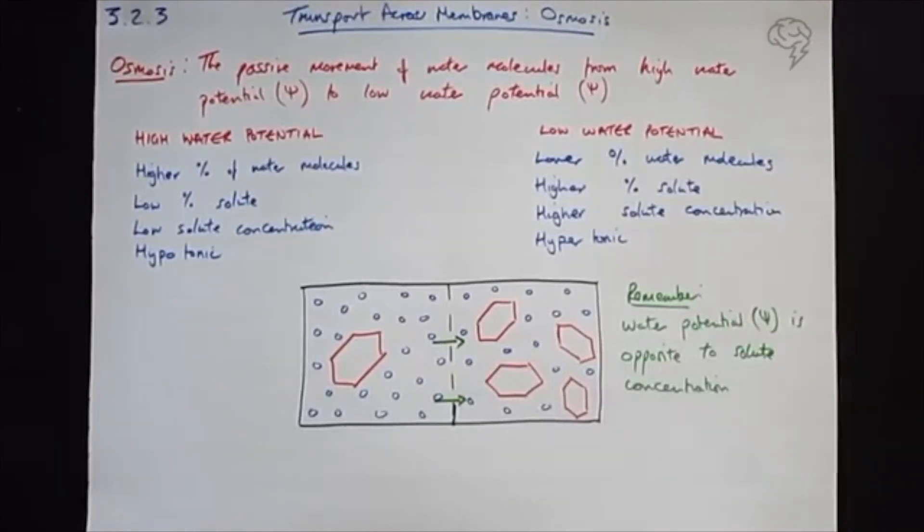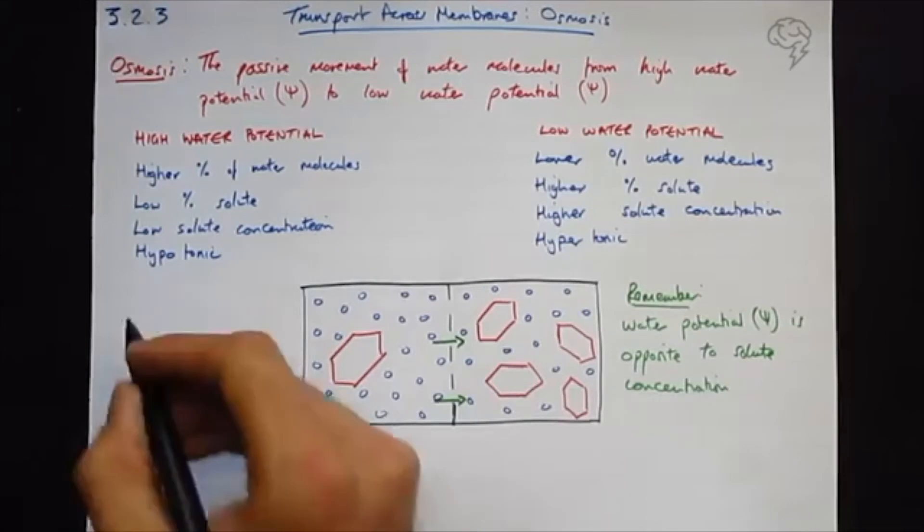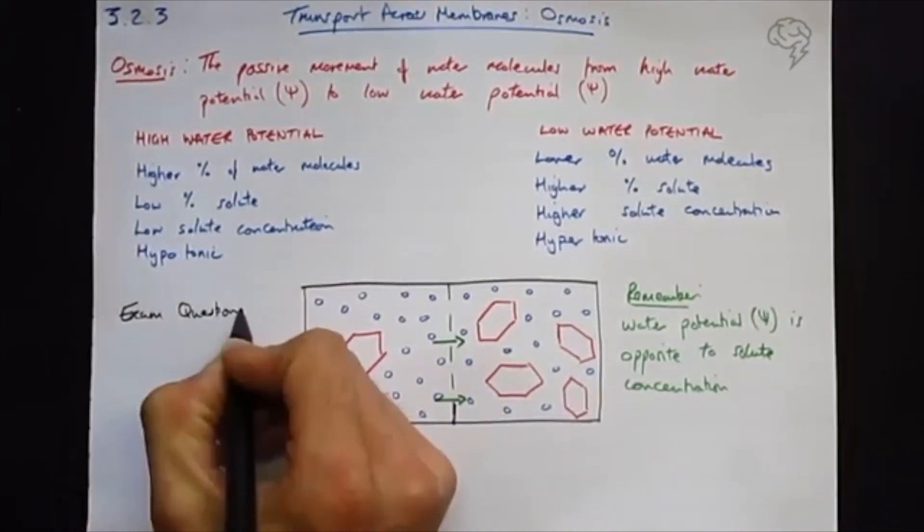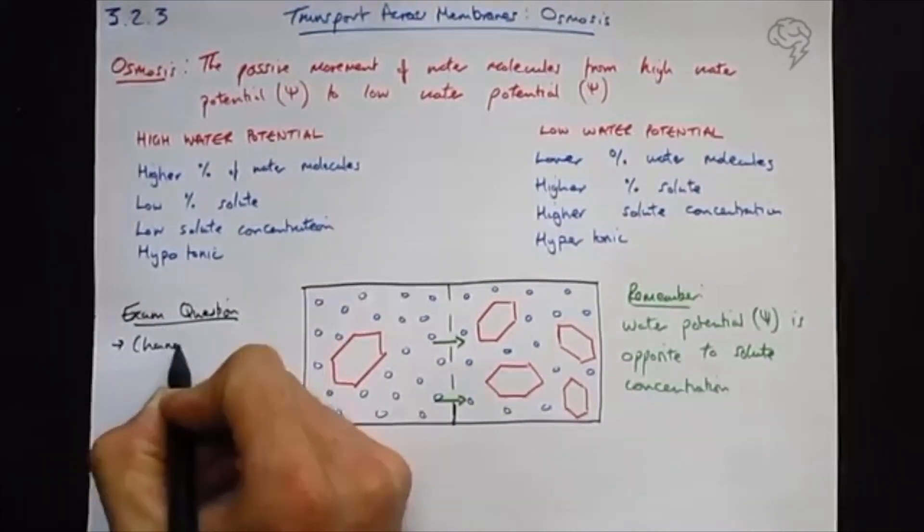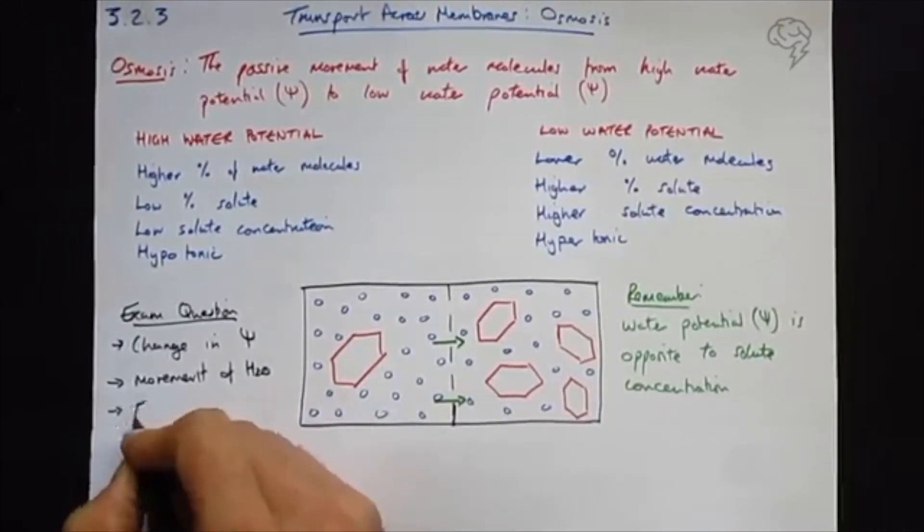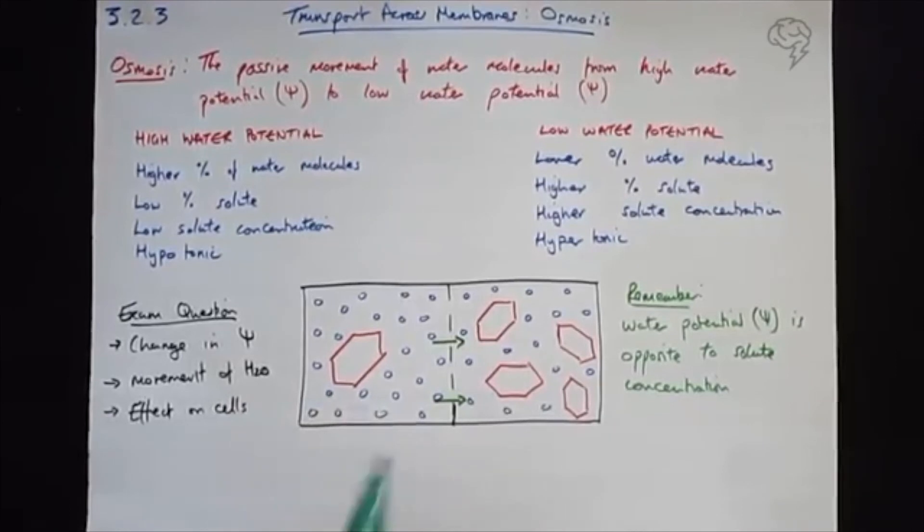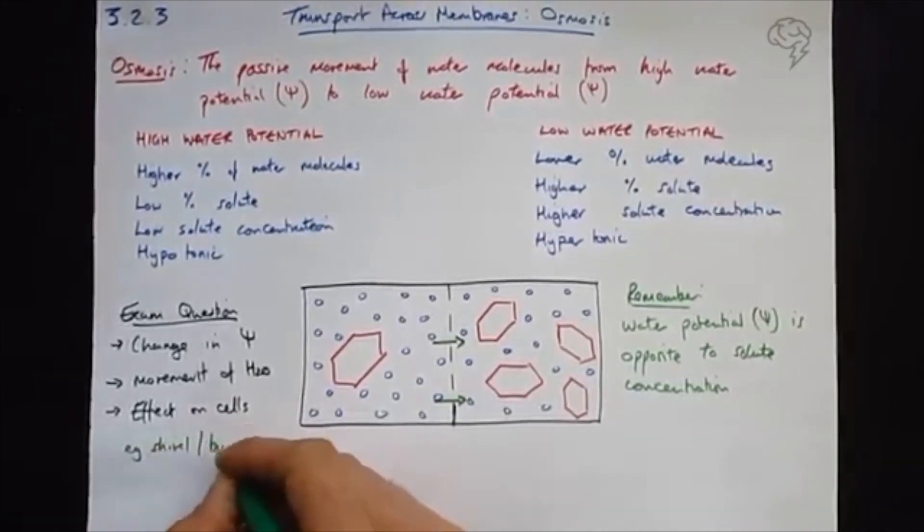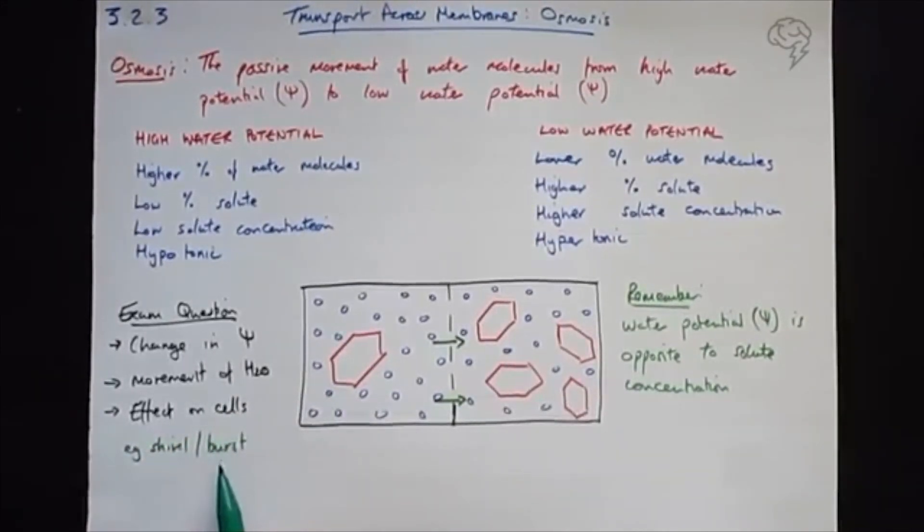This is the thing that most students get wrong all of the time. And how do they tend to ask in these exam questions? Well, they ask about the change in water potential and they ask about the movement of water molecules and whether that affects the cells. Do they shrink? Do they burst? What happens to the change in shape or size of the cells? Could be organelles, it doesn't always have to be cells.